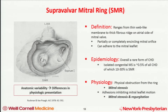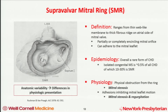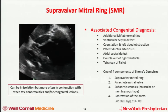With supravalvular mitral rings, they can range between thin web-like membranes to thick fibrous ridges, and they can adhere to the mitral valve. Overall it's a rare form of congenital heart disease, seen in about 0.5% of all congenital heart lesions, and somewhere between 10% to 30% in the literature are reported to be supravalvular mitral rings among congenital mitral stenosis cases. The physiology depends on the degree of obstruction but is very similar to valvular mitral stenosis from the rheumatic world. Adhesions on the mitral leaflet can also lead to secondary mitral regurgitation, with a lot of anatomic variability affecting the physiology.